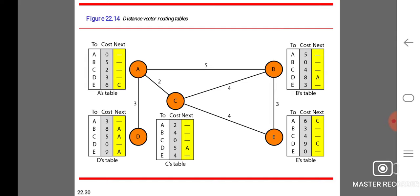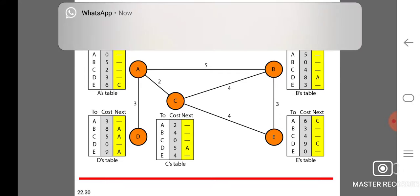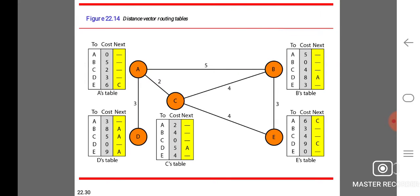Distance vector routing tables. This is an example that shows the distance vector routing table. From A to B distance is 5, B to E distance is 3, C to U distance is 4, C to B distance is 4, A to C distance is 2, and A to D distance is 3. Based on this we have to calculate the distance among the paths.